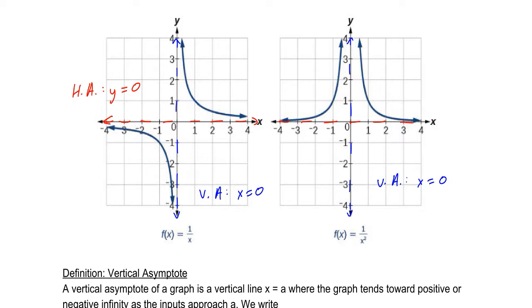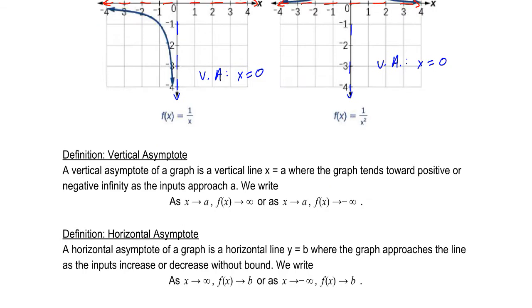When we perform transformations on rational functions, what changes essentially is those asymptotes. So we want to keep that in mind.